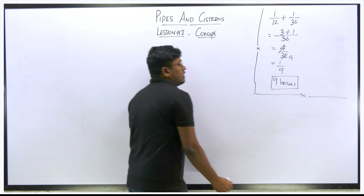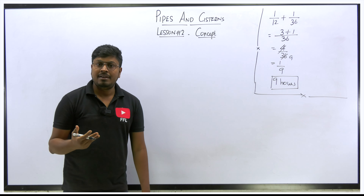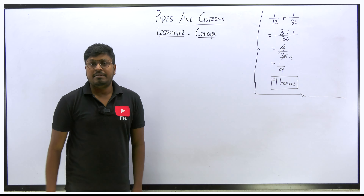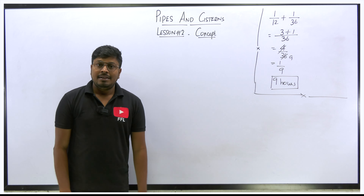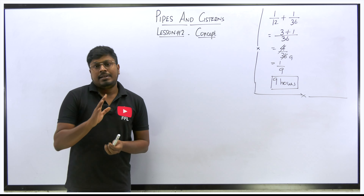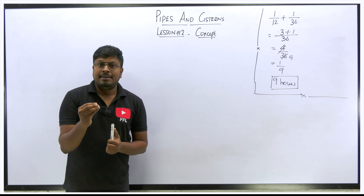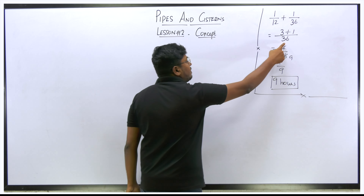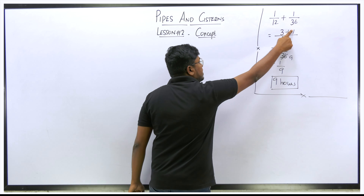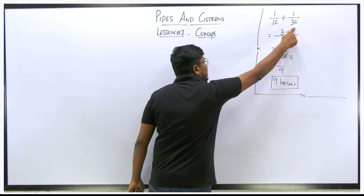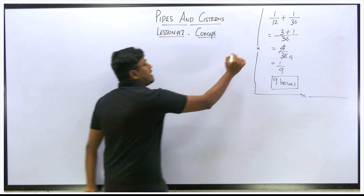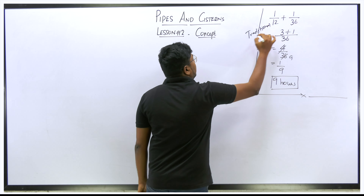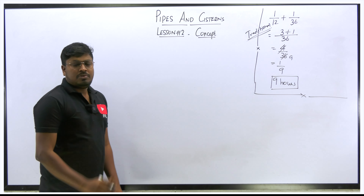This is how our teachers taught us while solving time and work questions: 1/12 + 1/36, take LCM of 36, get 3+1=4 over 36, and after cancelling we say the answer is 9 hours. That's correct — 9 hours it takes to fill the tank. But you have to understand the basic thing: why are we taking LCM? Why are we cross-multiplying? Where does this 4 come from? Why are we adding 3 plus 1? What is that 3 and what is that 1? Understanding all these things will make solving questions very easy.